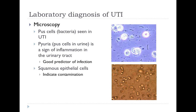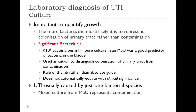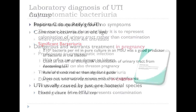Under microscopy, we look for red cells, white cells, and squamous epithelial cells — the latter come off the perineum and if present indicate contamination. In the laboratory, we perform a semi-quantitative culture: a measured amount of urine is spread on a plate and the number of colonies is counted. Studies suggest that ≥10⁵ bacteria per ml in pure culture is a good predictor of genuine presence of bacteria in the bladder.